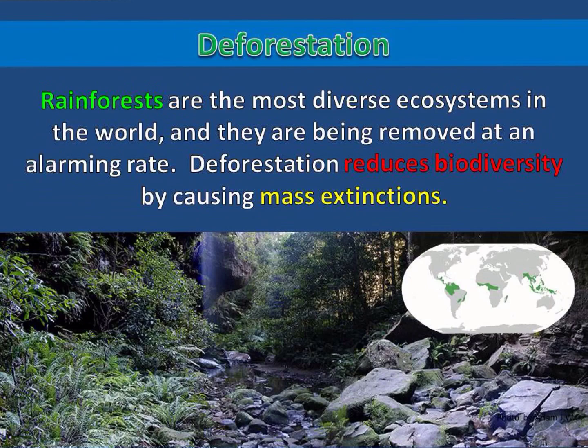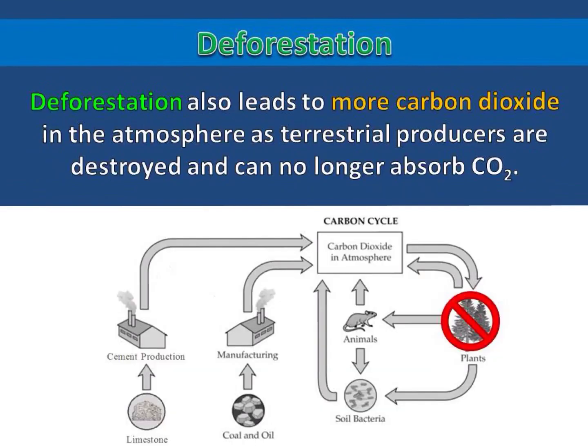This is because there are some species that only live in one part of a rainforest. When that part of the rainforest is removed through deforestation, those species will be lost forever. Deforestation also leads to more carbon dioxide in the atmosphere, as terrestrial producers are destroyed and can no longer absorb carbon dioxide.